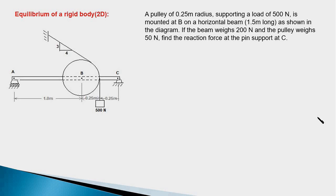First, let's talk about the regular way of solving the problem. The beam is 1.5 meters long. At point A we have a roller support, and at the end C we have a pin support. The pulley has a radius of 0.25 meters and it supports a weight of 500 newtons.